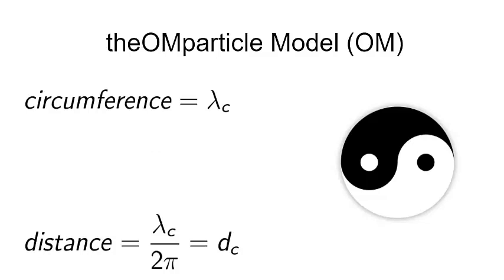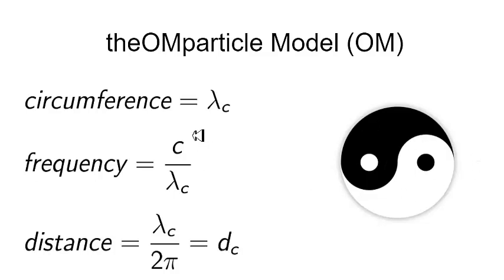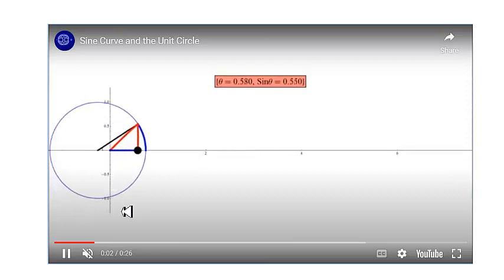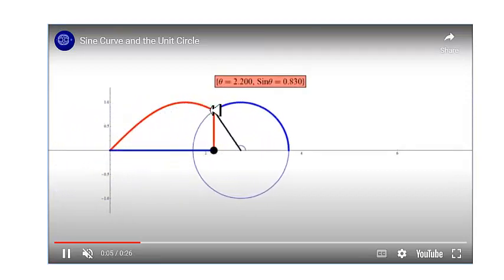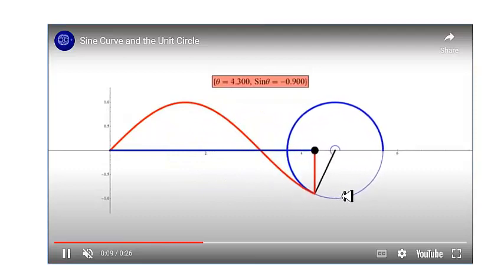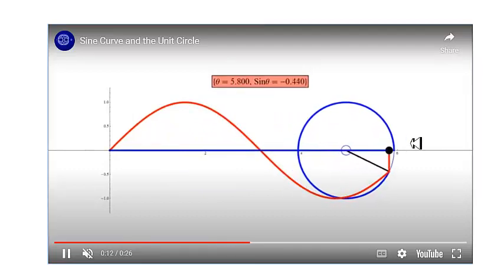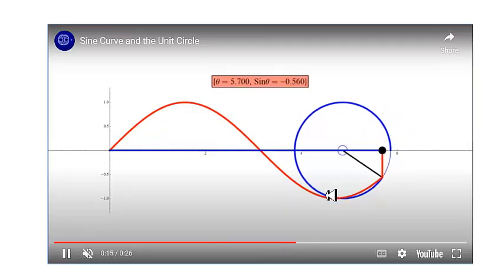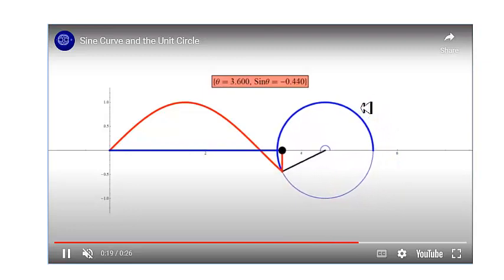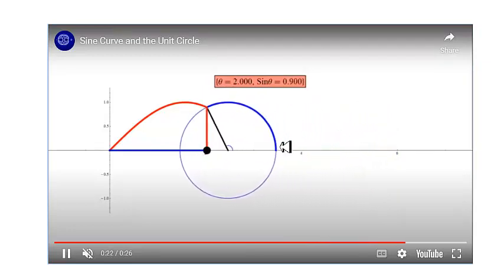I do need the frequency. The frequency of spin of this particle is the speed of light divided by the Compton wavelength. The reason I can justify using the circumference of the model as the Compton wavelength is because of the relationship between the circle and the wave. Halfway around the circle is half a wave, and the other halfway around is the other half of the wavelength. So one complete turn around the circle is equivalent to one wavelength.